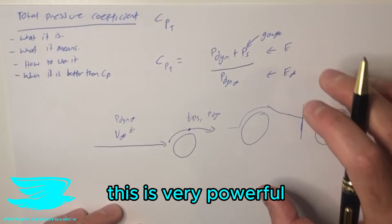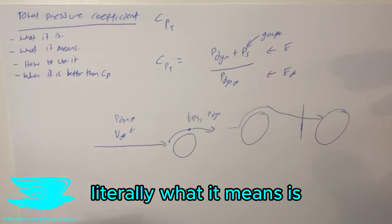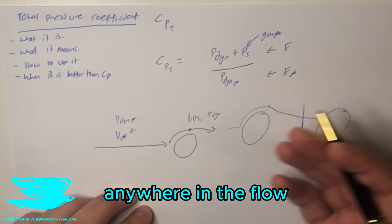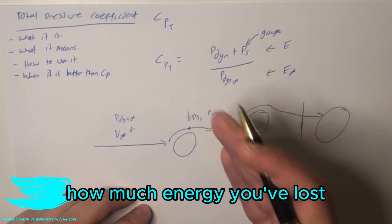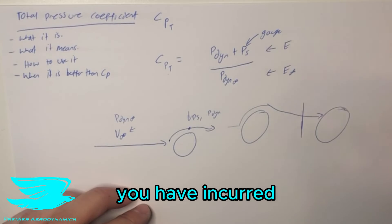So from a drag point of view, this is very powerful. Literally what it means is if you just look at the total pressure coefficient anywhere in the flow, you can get a pretty good idea as to how much energy you've lost and hence how much drag you have incurred.